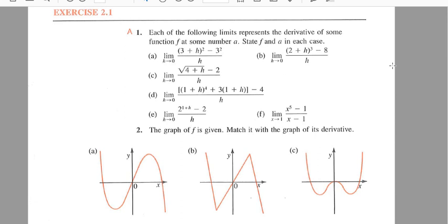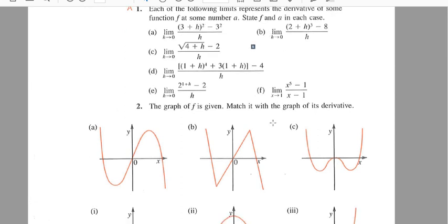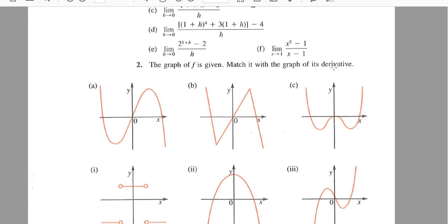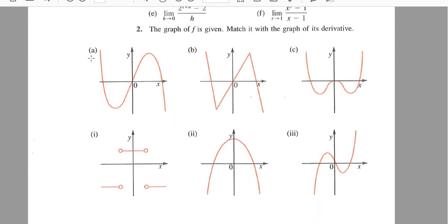Okay, let's look quickly at number 2. The graph of f is given, that's a, b, and c. Match it with the graph of its derivative. So over here, right about here, I have the derivative is equal to what? Zero.